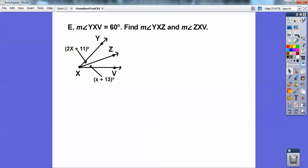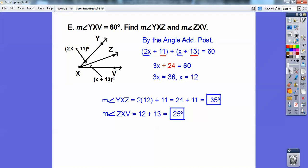So the measure of angle YXZ is 60. So here's Y, X, I'm sorry, X, V. The whole angle is 60 right there. And then so I'm going to use angle addition postulate. This angle plus this angle equals 60. The angle addition postulate. All right, so we get X equals 12, and then we've got to plug 12 into each one of those, and you should get 35 and 25. And notice they add up to 60.